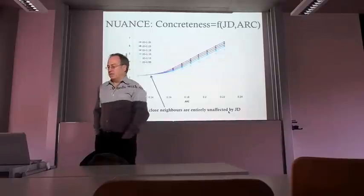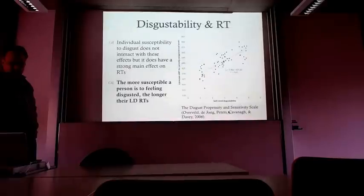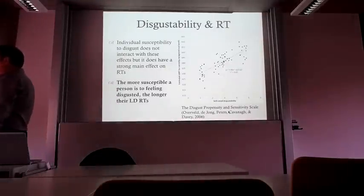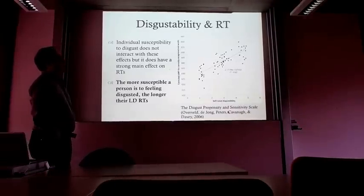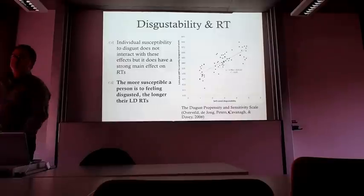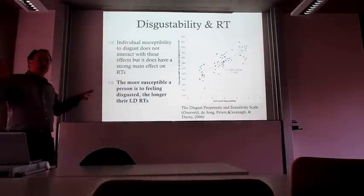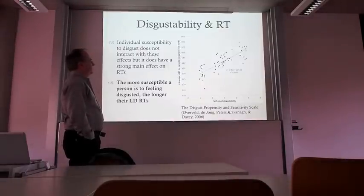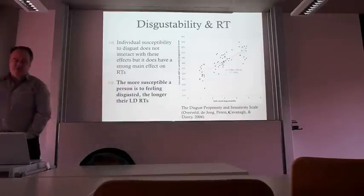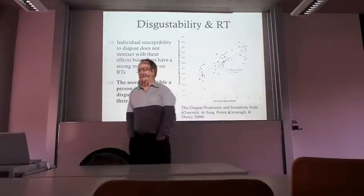Our original plan was to manipulate how sensitive people were to disgustability and see if it affected the concreteness effect—whether people more susceptible to disgust would show slower responses to abstract words. We used the disgust propensity and sensitivity scale, picking out highly and not-at-all sensitive people. Nothing came out of the predicted interaction, but we did find the main effect of disgustability: people who are highly prone to disgustability are slower at making lexical decisions than people who are not.